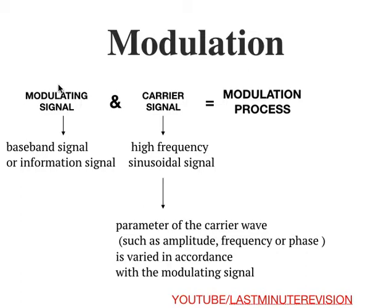Another name for modulating signal is baseband signal or information signal. The carrier signal consists of a high frequency sinusoidal signal. The parameters of the carrier wave — such as amplitude, frequency, and phase — are varied in accordance with the modulating signal. So the carrier signal is not fixed; it is completely dependent on the modulating signal.